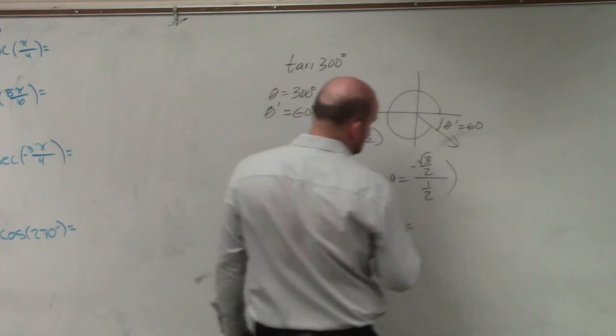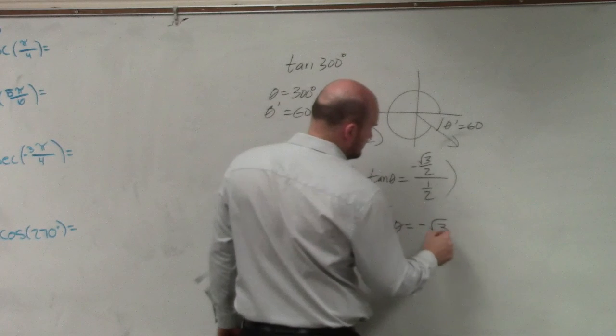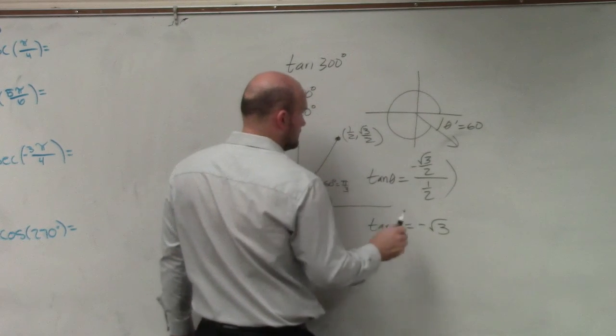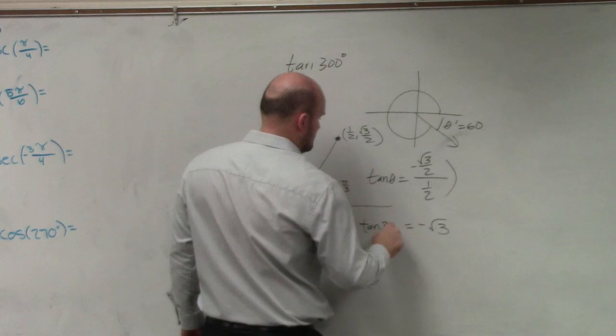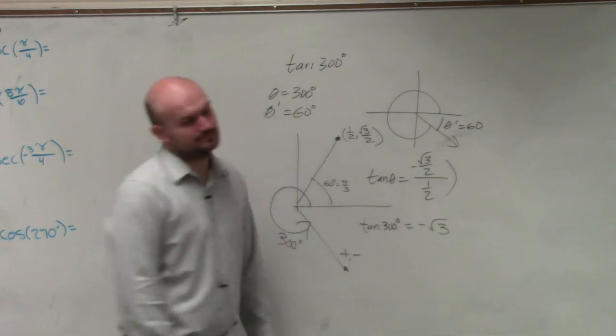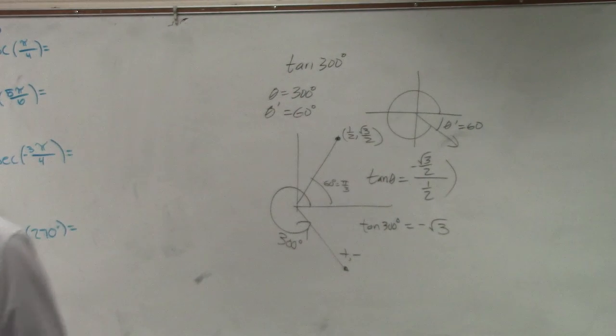You can multiply by your reciprocal, and you're going to get negative square root of 3. Multiply by 2 over 1 on the top and bottom.